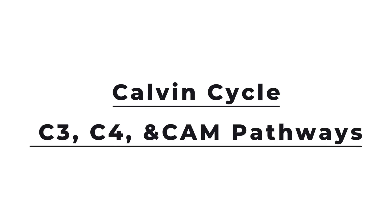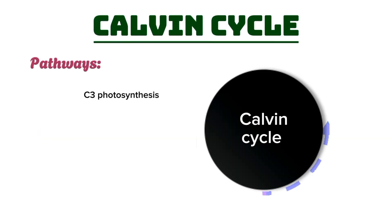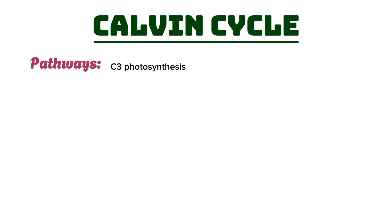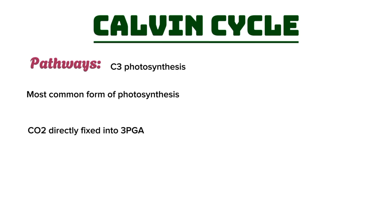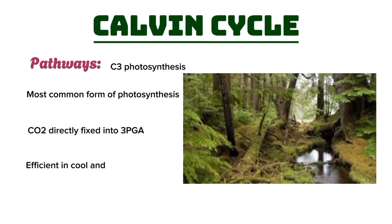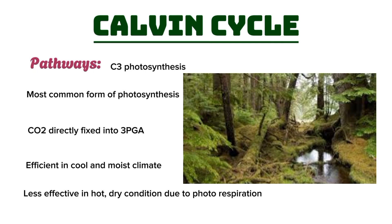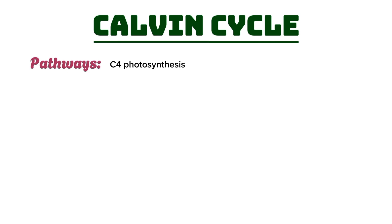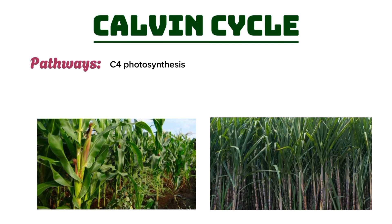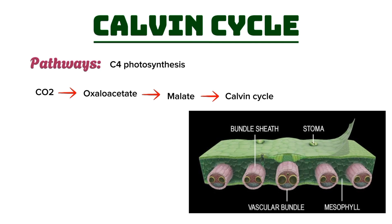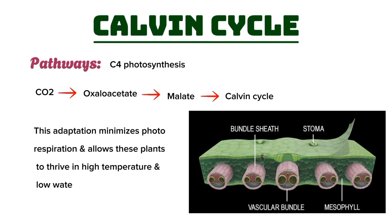Let's explore the different pathways associated with carbon fixation: C3, C4, and CAM. The C3 pathway is the most common form of photosynthesis, where carbon dioxide is fixed directly into 3-phosphoglycerate via the Calvin Cycle. This pathway is efficient in cool, moist climates but can be less effective in hot, dry conditions due to photorespiration. In contrast, the C4 pathway is an adaptation found in some plants, such as maize and sugarcane. In this pathway, carbon dioxide is initially fixed into a 4-carbon compound, which is converted into malate and transported to specialized bundle sheath cells where it enters the Calvin Cycle, minimizing photorespiration and allowing these plants to thrive in high temperatures and low water availability.